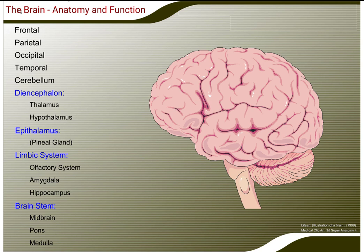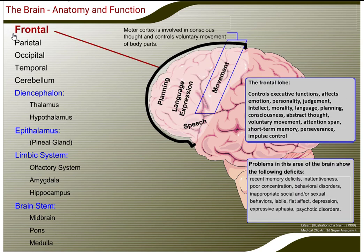The frontal lobe. This area of the brain controls executive functions and affects emotion, personality, judgment, intellect, morality, language, planning, consciousness, abstract thought, voluntary movement, attention span, short-term memory, perseverance, and impulse control.